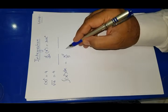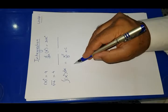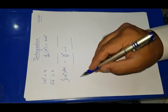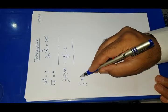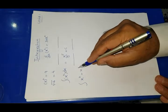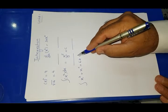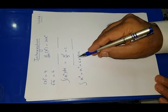If we give x to power 4, the answer would be: increase the power by 1 and divide by the same number. And plus c comes always. Okay, let's show one more example: x to power 3 plus x to power 2 plus 6x, and dx.